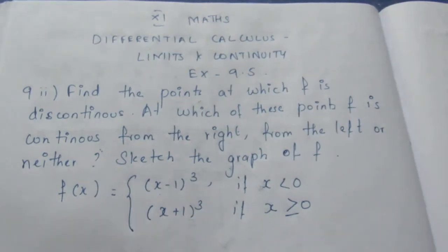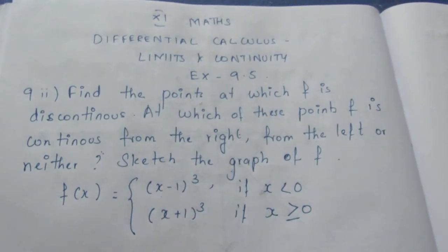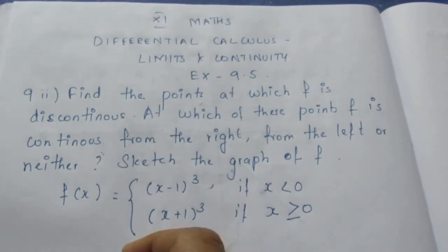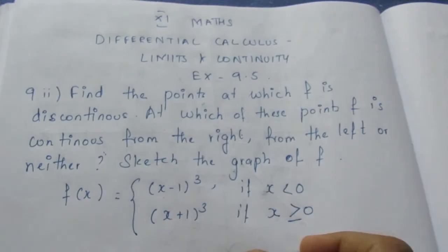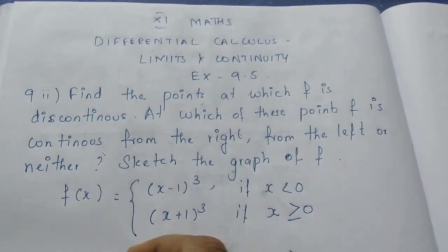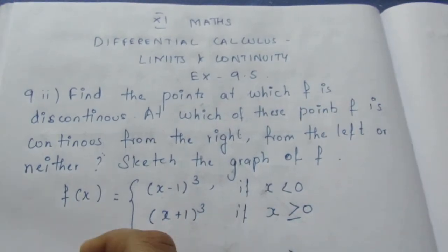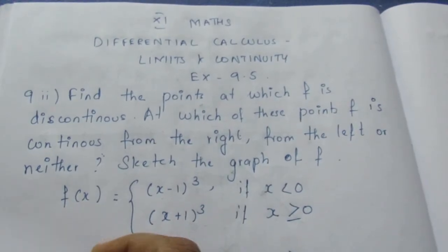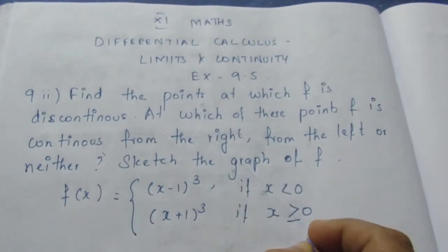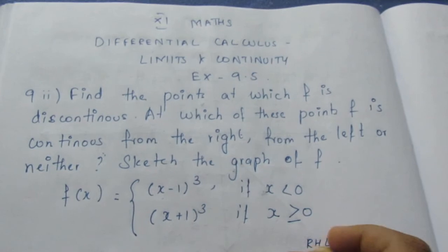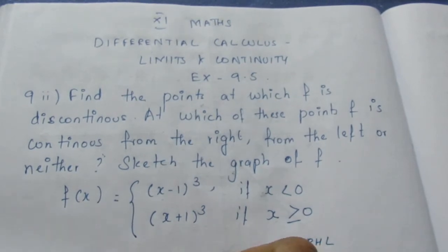Now first, we check whether the function is continuous or discontinuous by checking the number line. This is the Left Hand Limit (LHL) and this is the Right Hand Limit (RHL). This is at point 0.